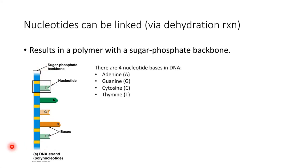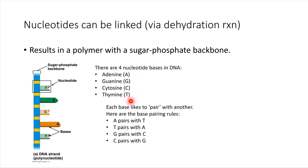In DNA, there are four possible nitrogen bases. Each base likes to pair with a neighbor, and we've got base pairing rules. We'll see these again later when we talk about DNA in more detail. A always pairs with T, T always pairs with A, G always pairs with C, and C always pairs with G. Those are the base pairing rules.